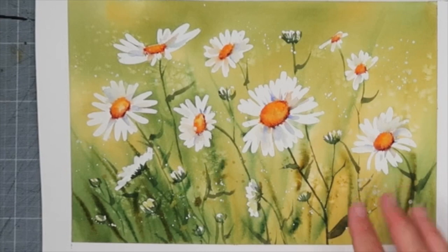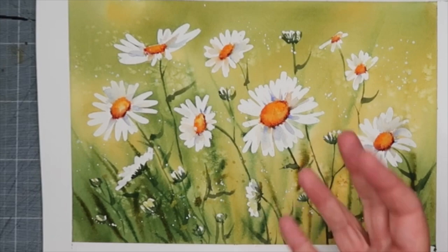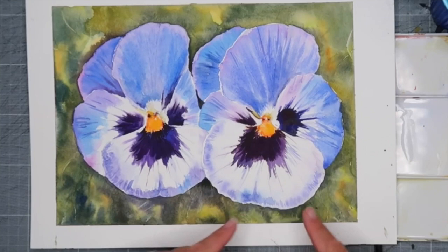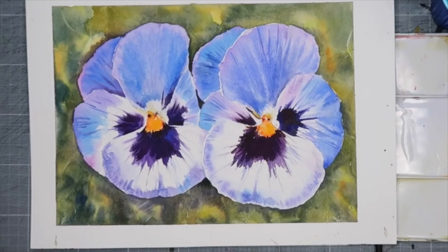Once everything's dry and you finish painting around these tricky areas, you can peel off the masking fluid to reveal the white paper underneath. Here's an example of where I don't use masking fluid because these white areas are a bit larger and weren't too fiddly to paint around.